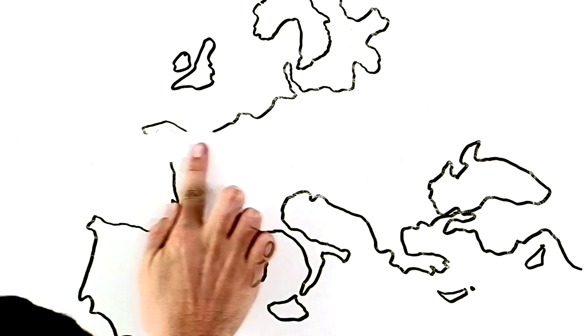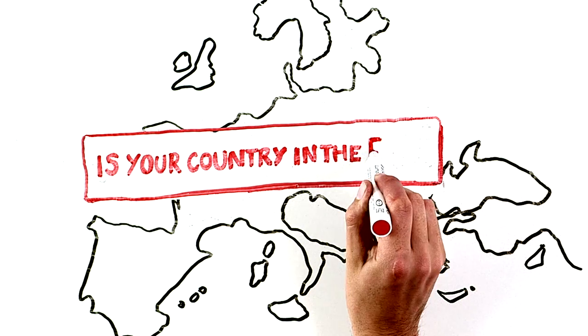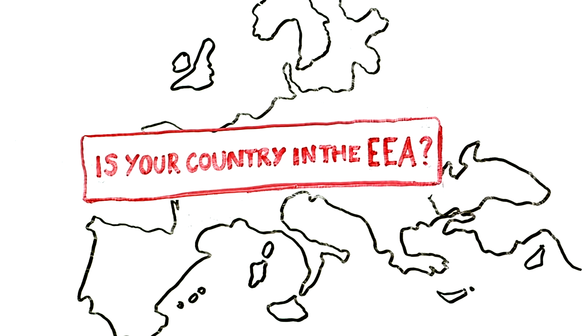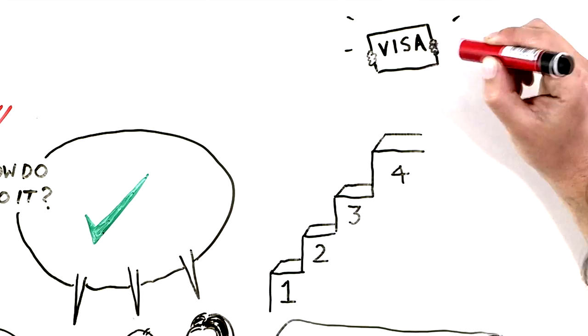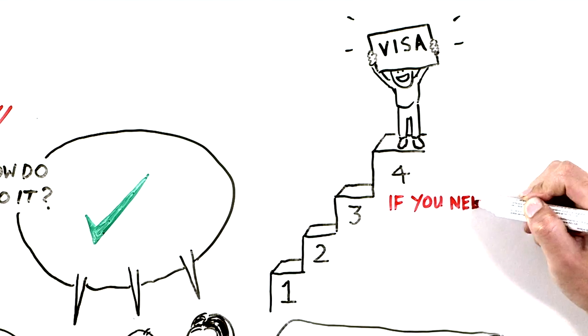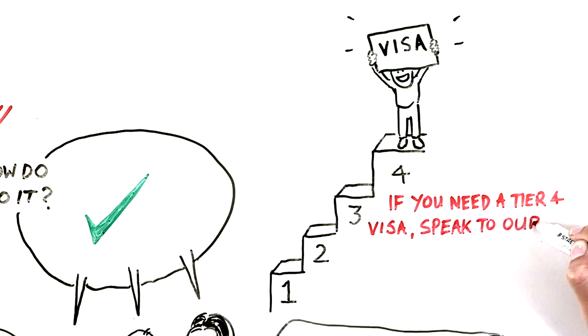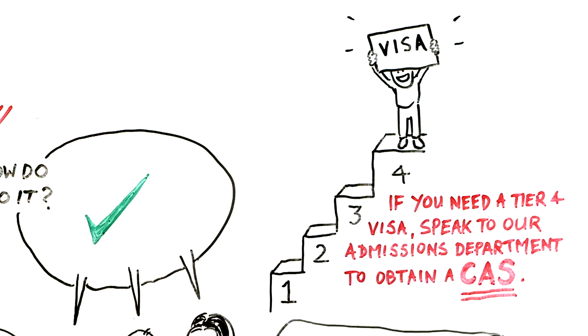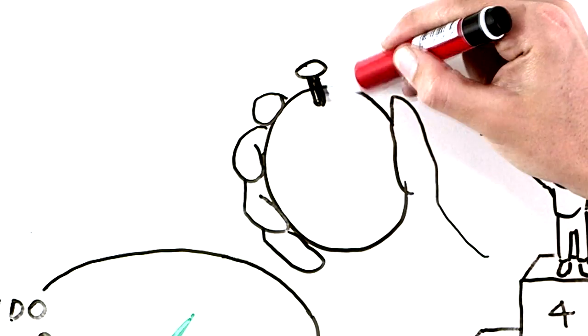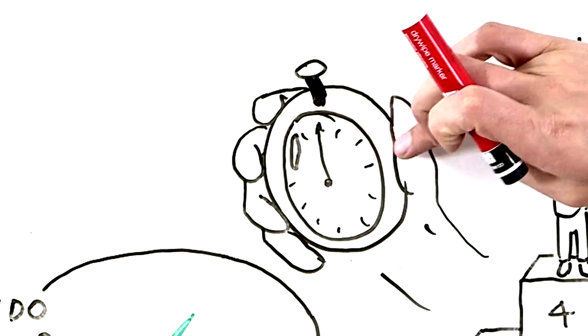If you're a national of a non-EA country, you must have a visa to study at SOAS. If you need a Tier 4 visa, speak to our admissions department to obtain a confirmation of acceptance for studies, often referred to as CAS. Make sure you apply for your visa in good time, as we'll need to see this when we enroll you.